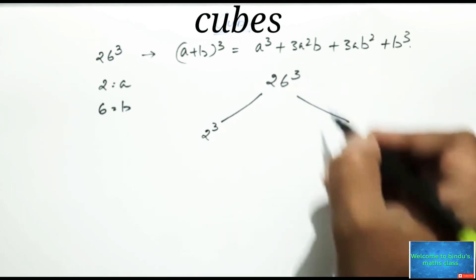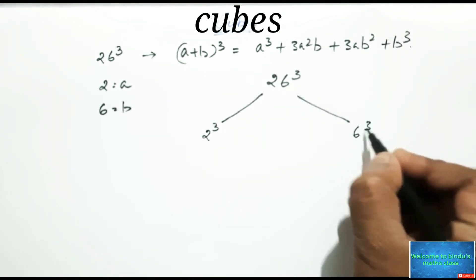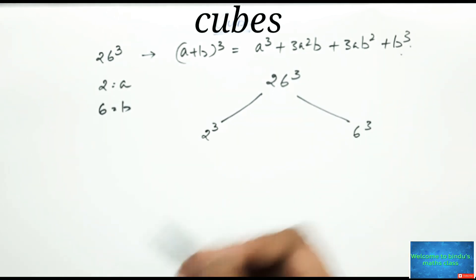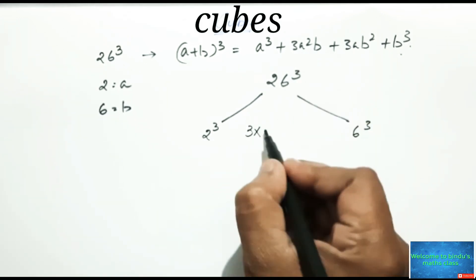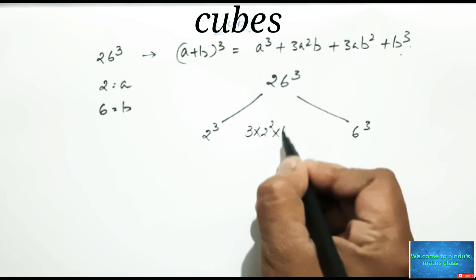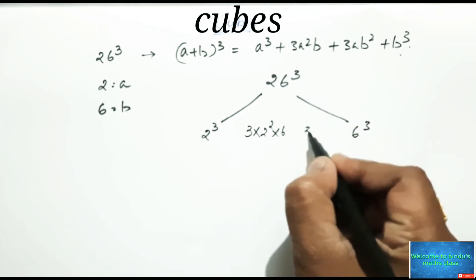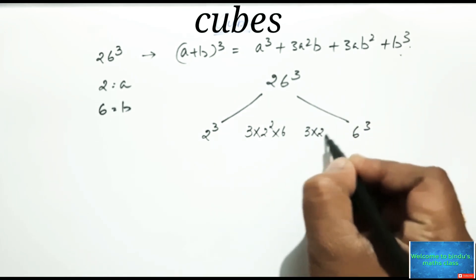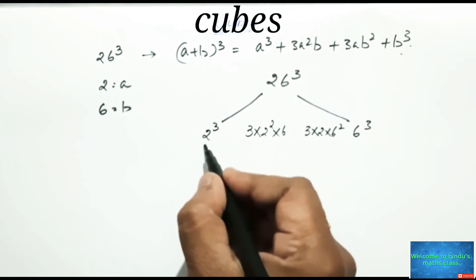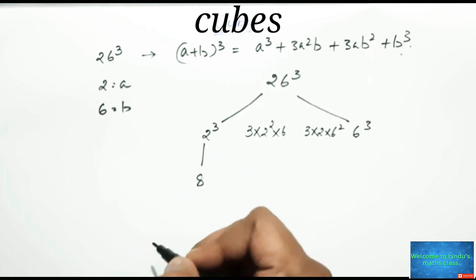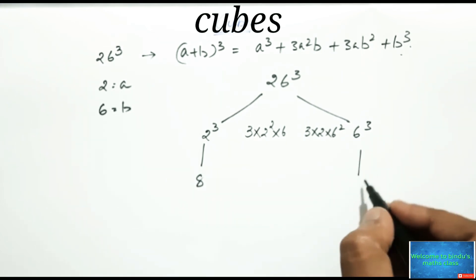And you know 6 cube which means b cube, and here 3 into 2 square into 6, and next step is 3 into 2 into 6 square. Please write down 2 cube is 8 and 6 cube that is 216.